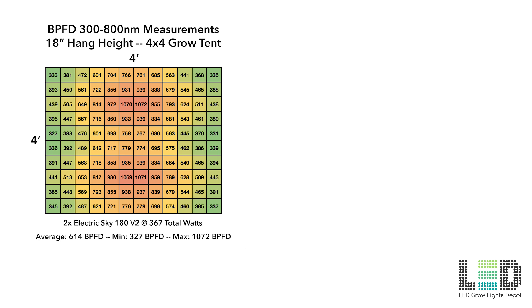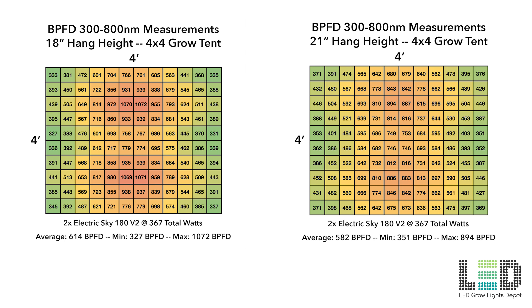The Green Sunshine Company took PAR readings of the ES180 in a 4x4 grow tent at 18 inches and 21 inches. Now keep in mind that they're using BPFD, which takes the spectrum into consideration, and includes light energy into the infrared range.